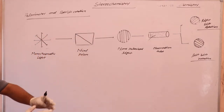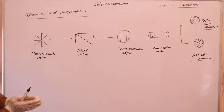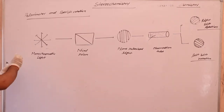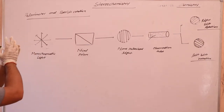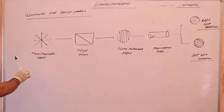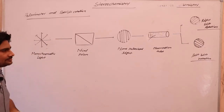The measurement of the angle of rotation is done by an apparatus called a polarimeter. We know that monochromatic light is passed through a nickel prism.